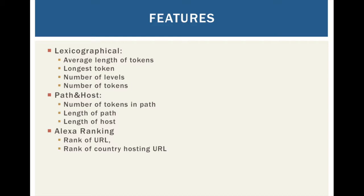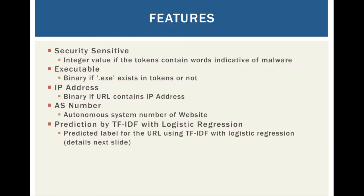We then look at the path and host of the URLs: the number of tokens in the path, the length of the path, and the length of the host. We also covered online ranking and site popularity through the rank of the URL on Alexa ranking, and the rank of the country that hosts the URL.